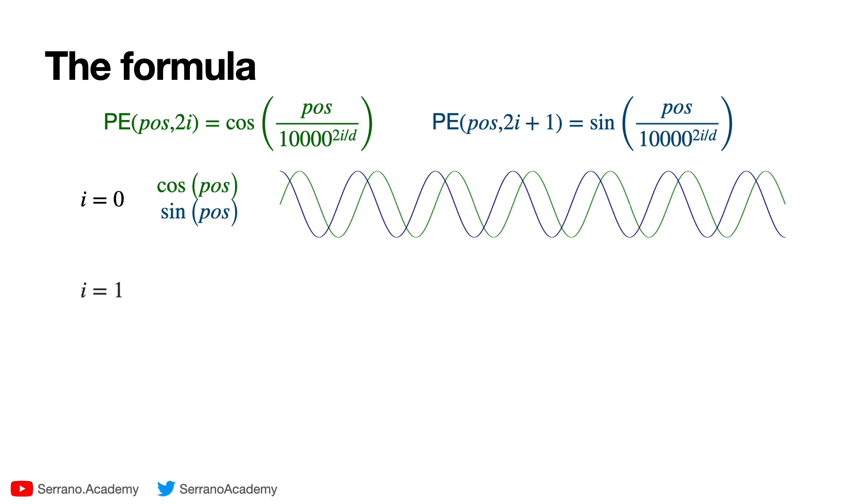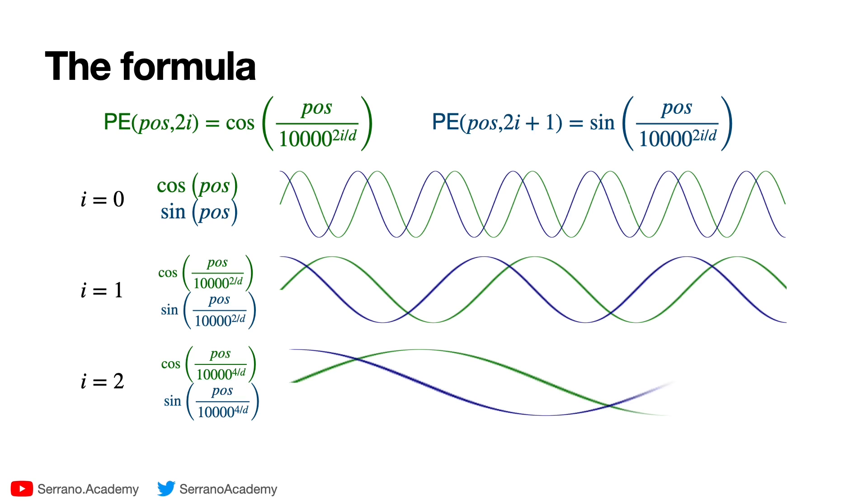If we let i equals one, then we have cosine of position divided by a big number and sine of position divided by a big number. That means that the sine and cosine gets stretched horizontally. For i equals two, the number we're dividing is even bigger, so the sine and cosine gets stretched even more, and so on and so forth. So if we have a very large embedding, everything gets modified, but the last numbers in the embedding are going to get modified in a very similar way, and the first numbers in the embedding are going to change a lot.